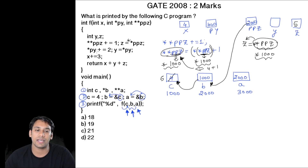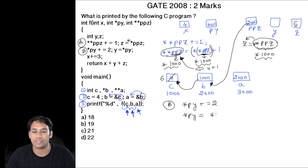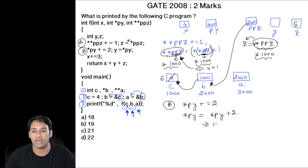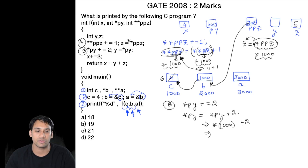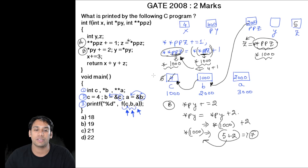The next statement (statement b) is *py += 2, which can be written as *py = *py + 2. This py is pointing to location 1000. So *py gives us the value at location 1000, which is 5. Therefore 5 + 2 = 7, and we store this value 7 back at location 1000. This means the value of c is updated to 7.